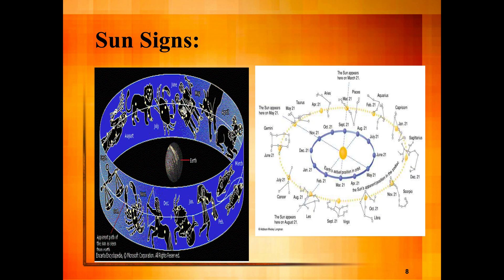Here we have the band of the zodiac. It should make sense why you can't see all those stars throughout the entire year. When you're facing the sun — daytime — you can't see the stars behind it because the sun's brightness washes them out. But as the Earth rotates, at nighttime you can see the stars on the opposite side. Fast forward six months and the reverse is true: different stars become visible at night while others are hidden behind the sun.